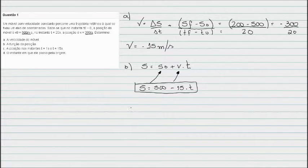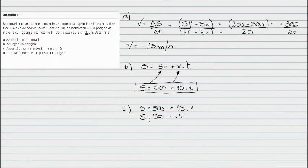Letra C: ele quer a posição do instante T igual a 1 segundo e T igual a 15 segundos. Então a gente vai calcular: posição final é 500 menos 15 vezes 1 segundo. Posição final é 500 menos 15, a gente já pode fazer a conta aqui. Posição final é 485 metros.